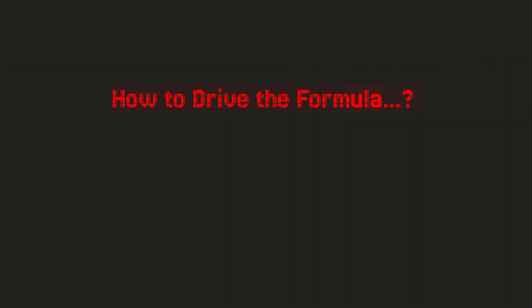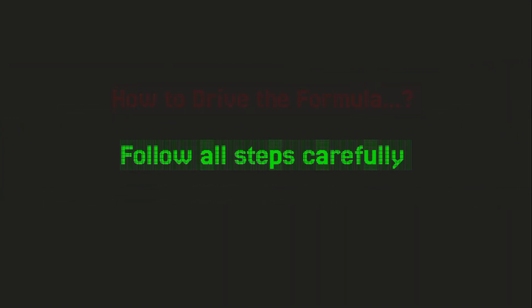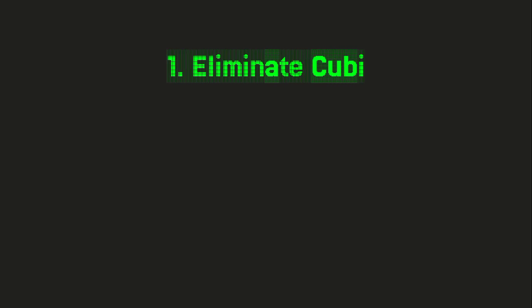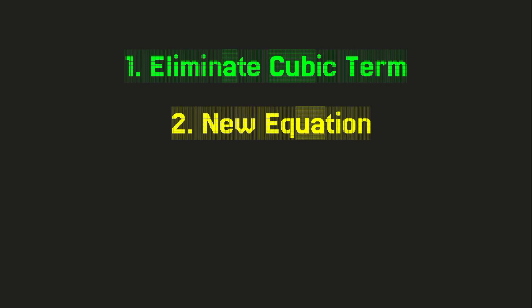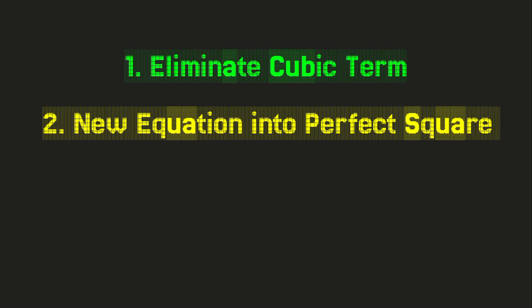In this video, we'll walk you through all the steps to derive the quartic formula. We'll start by eliminating the cubic term, then manipulate the equation step by step, turning it into perfect squares, and finally solve for the roots. We've created a set of detailed slides for you to follow along. These slides break down every step clearly and concisely to help you understand the derivation process. So stick around and watch the slides carefully to grasp this powerful method. Let's begin.